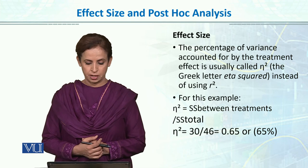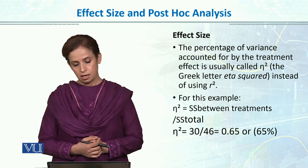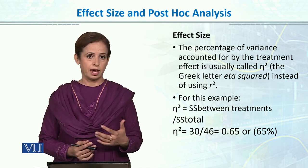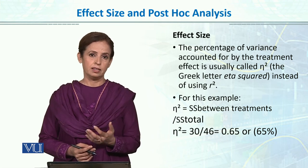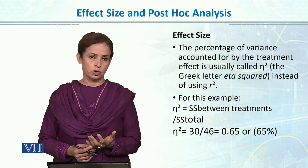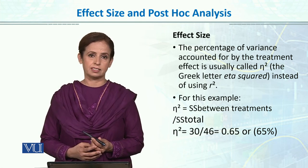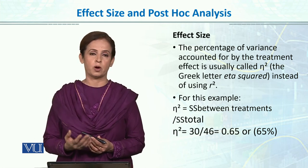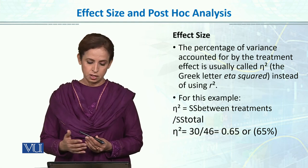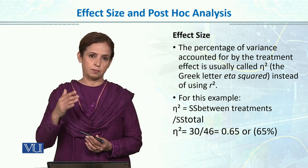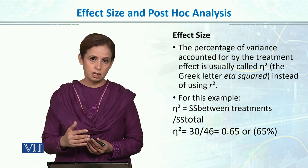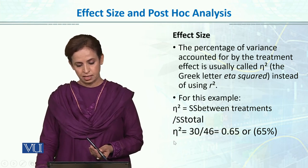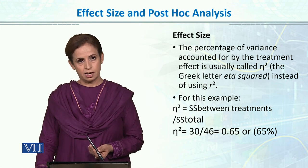It means effect size — how much percent variability in the dependent variable is explained by the independent or manipulated variable. When we divide 30 by 46, it is 0.65. It means 65% of the variability in driving performance is accounted for by just using phone or no phone. For effect size interpretation, 0.5 to 0.6 is medium effect size. So this is a medium effect size because our partial eta square value is 0.65.